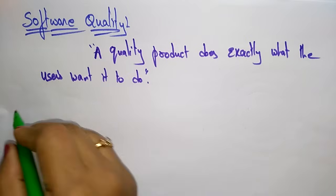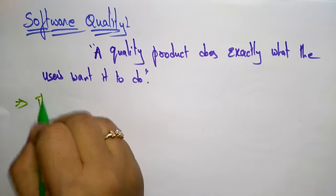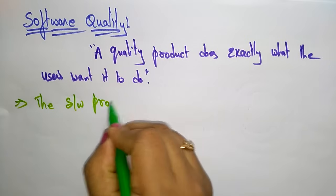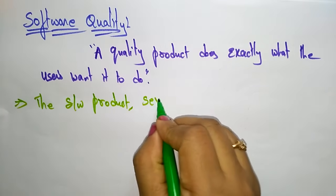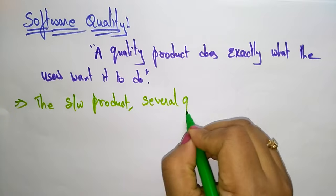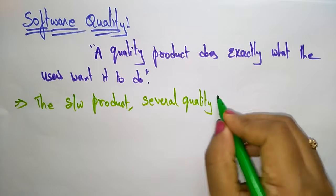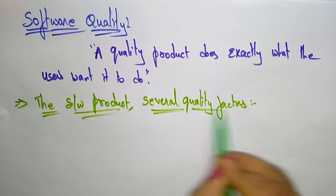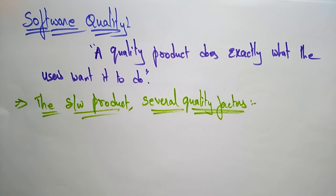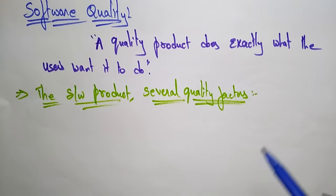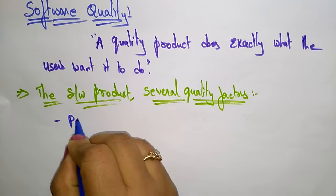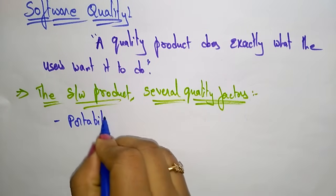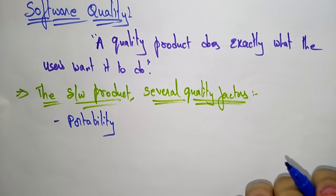Now let us see some of the software quality factors. Whatever software product you have taken, there are several quality factors present in it. In what terms can you say that it is a quality product? So those software quality factors include portability — if your software product has portability, then you can say it is a quality product.